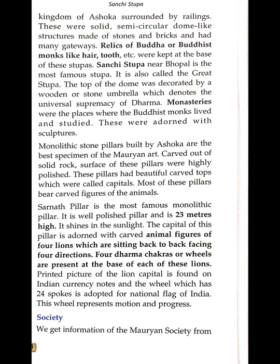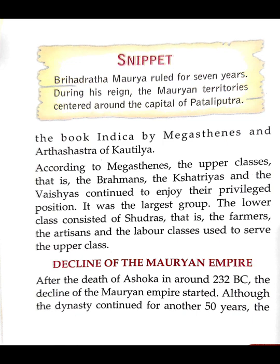We get information about Mauryan society from the book Indica by Megasthenes and the Arthashastra by Kautilya. According to Megasthenes, the upper classes — the Brahmins, Kshatriyas, and Vaishyas — continued to enjoy their privileged position. The lower class consisted of Shudras — the farmers, artisans, and labor class — who served the upper class.